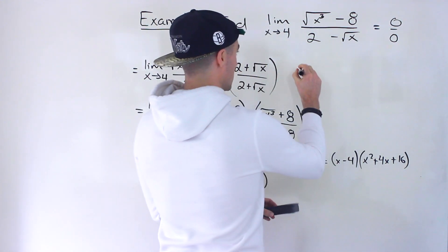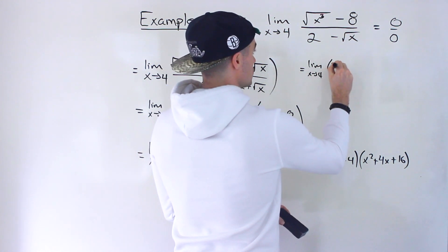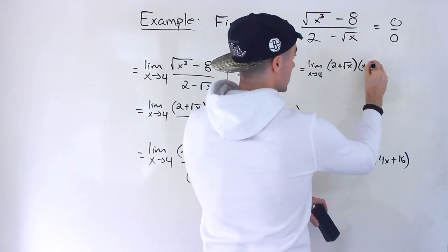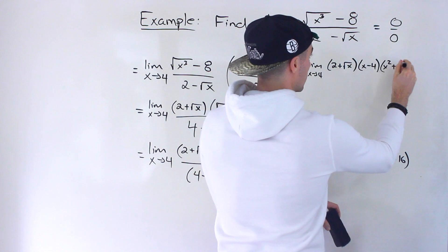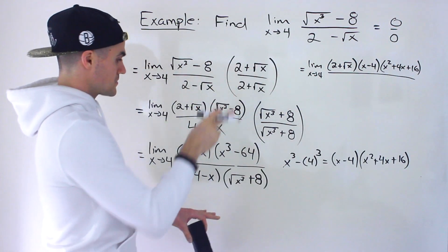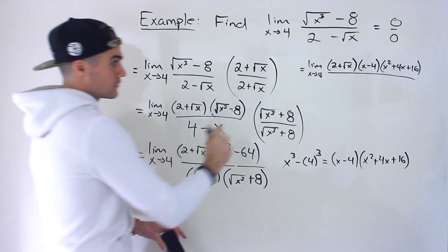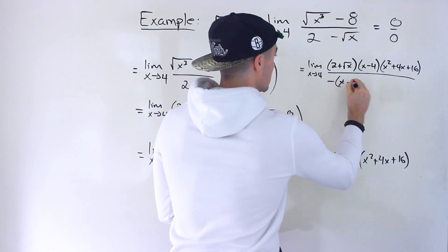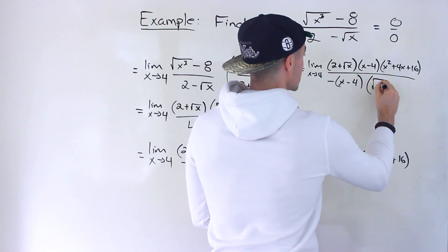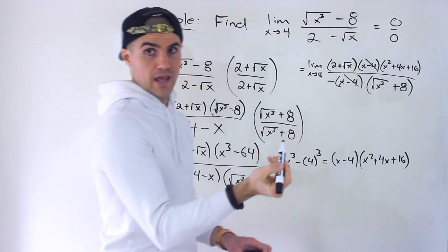So continuing, we have the limit as x approaches 4 of (2 plus root x) times (x minus 4)(x squared plus 4x plus 16), all over the denominator. Notice we have x minus 4 in the numerator and 4 minus x in the denominator — we take out a negative to make them match, giving us x minus 4, so those cancel out. We still have the square root of x to the power of 3 plus 8 in the denominator.